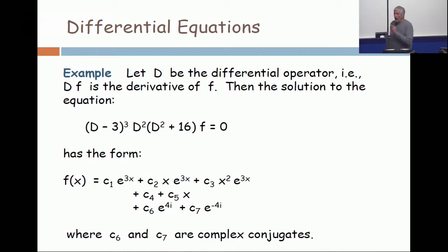Now the roots of the quadratic, d squared plus 16 is d plus 4i times d minus 4i. So the roots are plus and minus 4i. So now you have a constant times e to the 4i and another constant times e to the minus 4i.